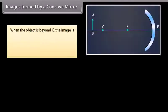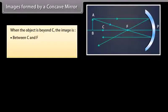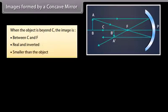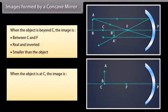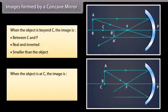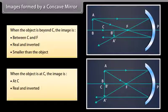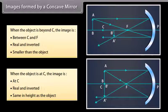Images formed by a concave mirror: When the object is beyond C, the image is between C and F, real and inverted, and smaller than the object. When the object is at C, the image is also at C, real and inverted, and the same height as the object.